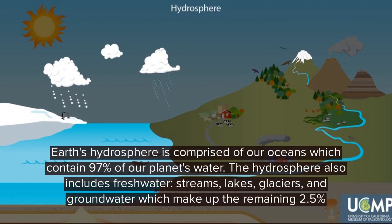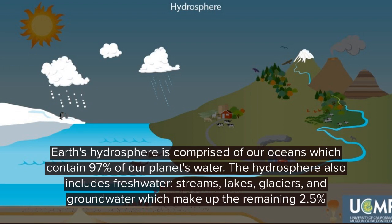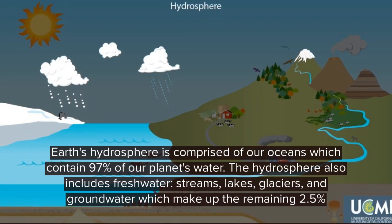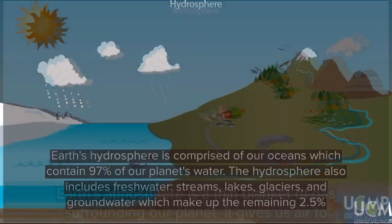Earth's hydrosphere is comprised of our oceans, which contain 97% of our planet's water. The hydrosphere also includes freshwater, streams, lakes, glaciers, and groundwater, which make up the remaining 2.5%.